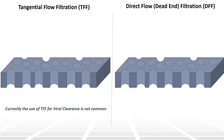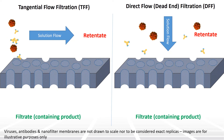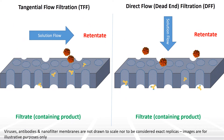Nano filters separate viruses from the protein of interest via two size exclusion mechanisms, as seen here. In both cases, the virus must remain in the retentate, yet allowing the product of interest to pass through.